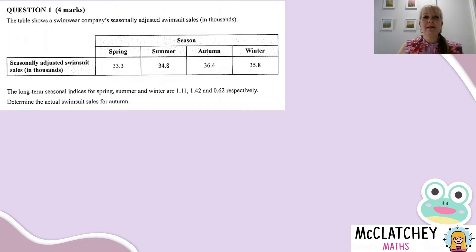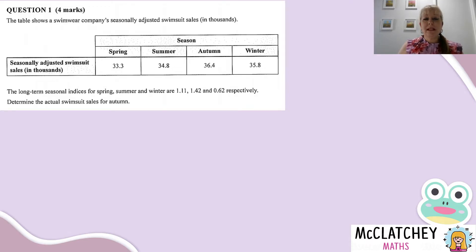Question 1 on this paper was a time series question and was worth 4 marks. The table shows a swimwear company's seasonally adjusted swimsuit sales in thousands — so the number of thousands of actual swimsuits that were sold. The long-term seasonal indices for spring, summer and winter are 1.11, 1.42 and 0.62 respectively. Determine the actual swimsuit sales for autumn.